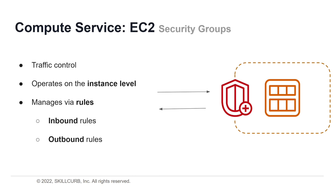When it comes to security groups on your EC2, all security groups do is manage how traffic comes and goes from your EC2 instance. Security groups operate on the instance level and manage your EC2 via a set of rules — your inbound rules and your outbound rules — which dictate what kind of traffic can communicate with your EC2.